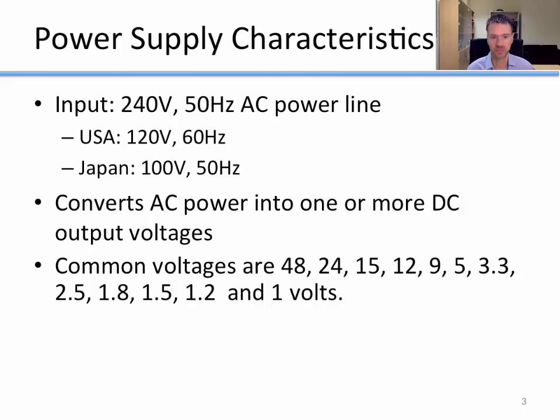An AC to DC converter converts AC power into one or more DC output voltages. There's a host of voltages you can get, ranging from 48 volts down to 1 volt. The most common ones for digital circuits are 5 volts or 3.3 volts.